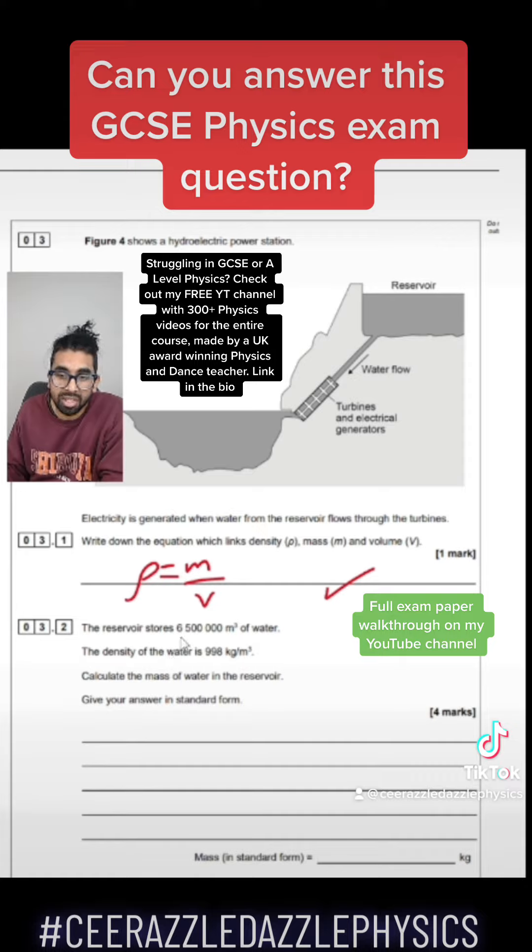The reservoir stores 6.5 million cubic meters of water. The density of the water is 998 kg/m³. Calculate the mass of the water in the reservoir.